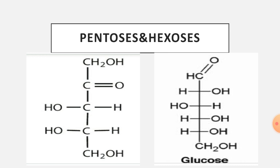Looking at the structure of pentoses: a pentose has 1, 2, 3, 4, 5 carbon atoms. The aldehydic functional group is at carbon number 1 (C=O with H), while the ketonic functional group is at carbon number 2 (C=O). There are hydroxyl (–OH) groups on carbons 3 and 4, and the fifth carbon ends with –CH₂OH.